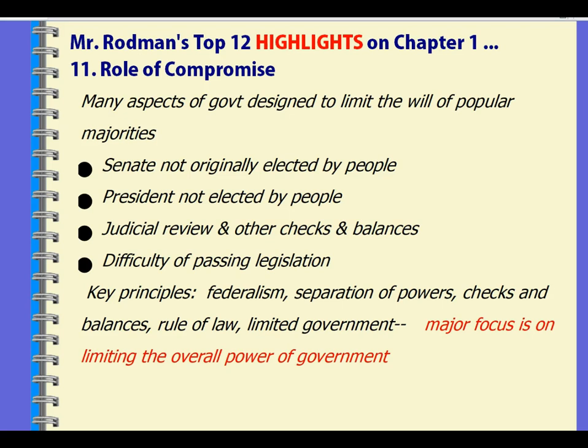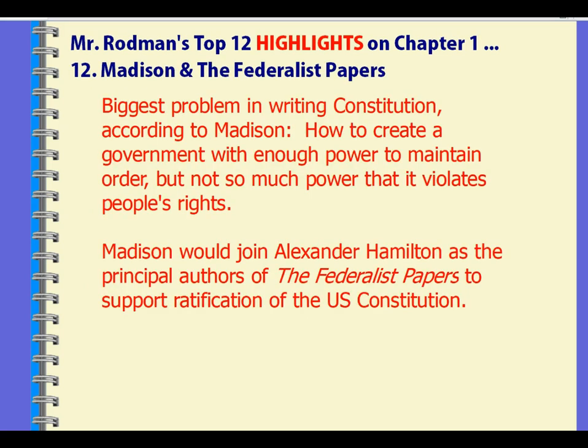This compromise was at play to limit the power of the national government using separation of powers, checks and balances, the federalism approach with national, state, and local government, and limited government in that capacity. That leads to Madison and his role in the Federalist Papers — Madison, John Jay, and Alexander Hamilton would become Publius, anonymously writing the Federalist Papers to support ratification of the Constitution.